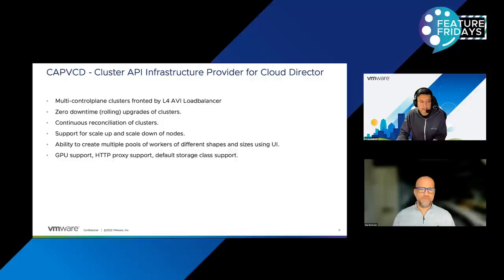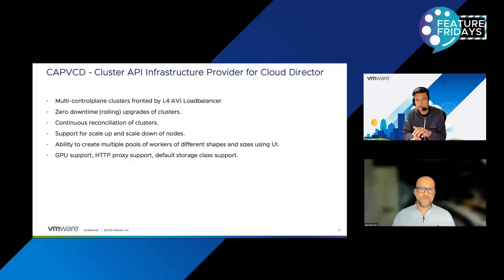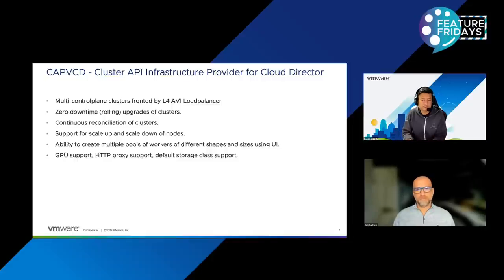With continuous reconciliation, if a user specifies they need a cluster with one control plane and three worker nodes, and while creating the second worker node there was some problem, CAPVCD will continuously try to bring the cluster to the desired state from the current state, and when the issue is fixed, cluster creation will be successful. CAPVCD also provides support for scaling up and down of nodes, and the ability to create multiple pools of workers of different shapes and sizes — for example, a TKG medium pool, a TKG large pool, or a GPU-activated pool for machine learning workloads.